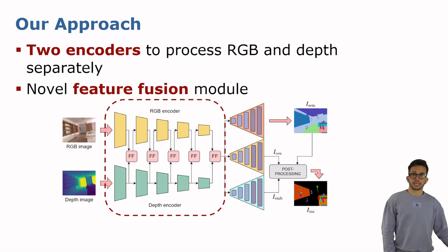Our convolutional neural network is composed of two separate encoders for RGB and depth processing. Despite being separate, we use a feature fusion module called FF in the image that merges RGB and depth feature vectors at different stages in the encoder.